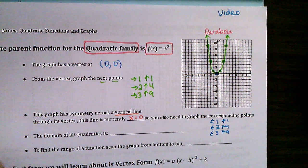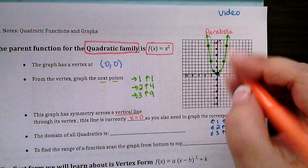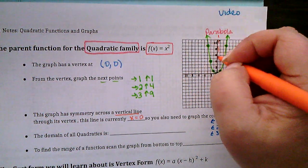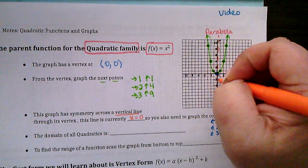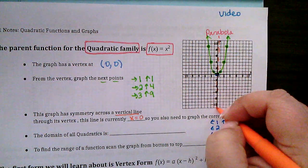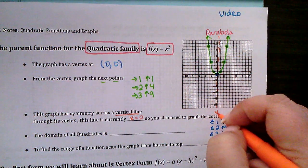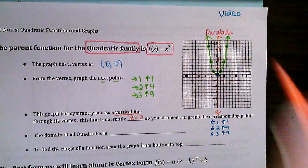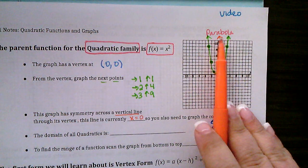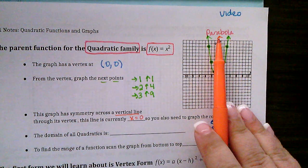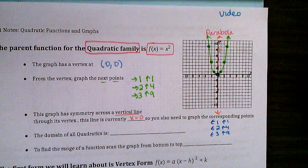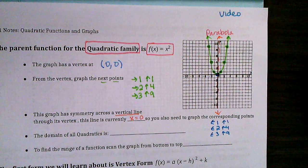This is a parabola, and its line of symmetry is on x equals 0, which also happens to be the y-axis. What that means is I could fold it across this line and both sides would match up perfectly.